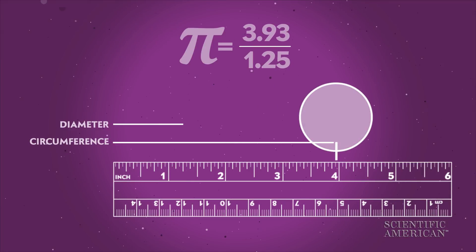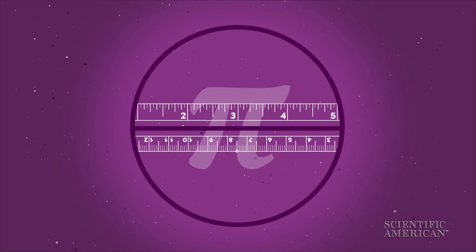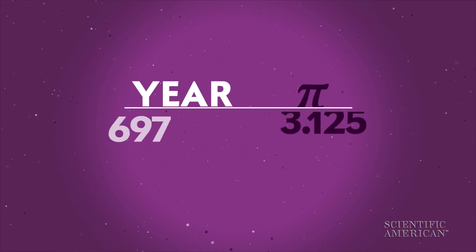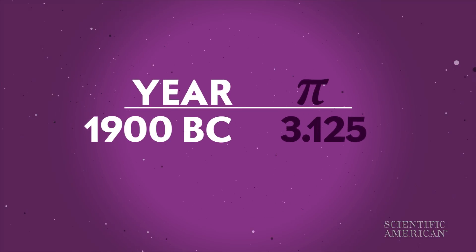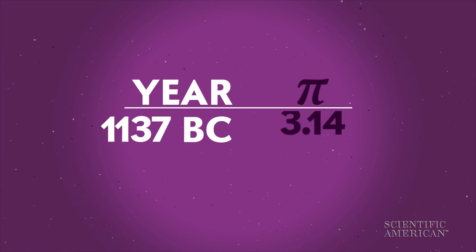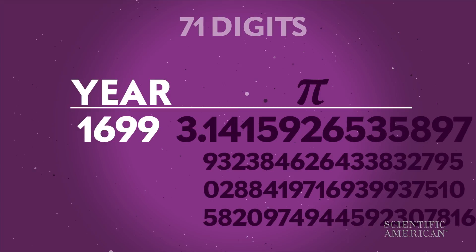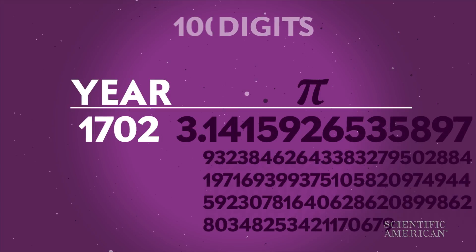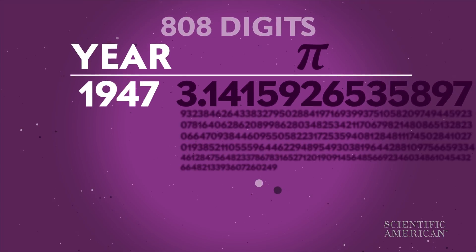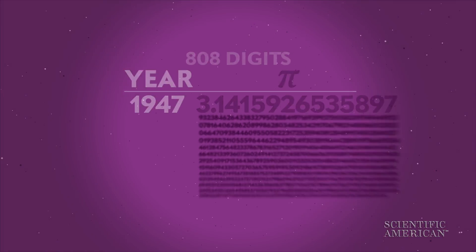Of course, your measurements are only as accurate as your ruler. Mathematicians have struggled for thousands of years to pin down pi's exact value. But pi is an irrational number, which means that there are infinitely many digits after the decimal point with no apparent patterns. So the challenge has become determining as many digits as possible.